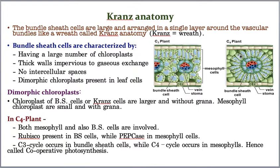In the C4 pathway, photosynthesis takes place in both mesophyll cells and bundle sheath cells. Because both cell types are involved and cooperate with each other, the C4 pathway is also called cooperative photosynthesis.